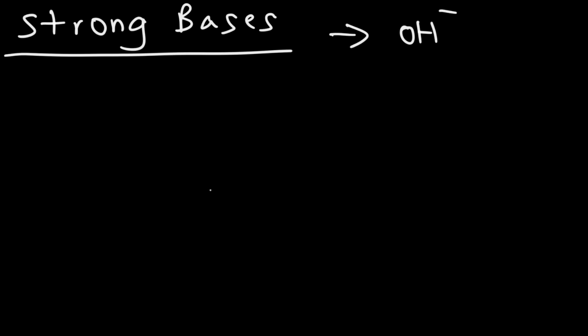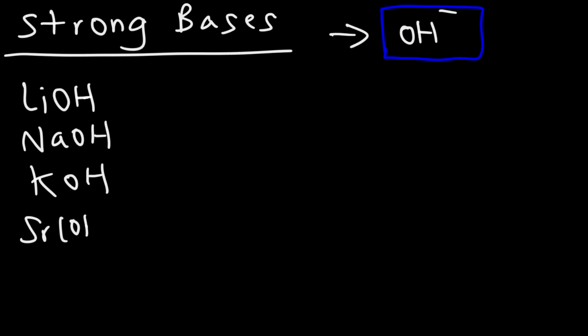Now let's talk about the strong bases that you need to know. Compounds that release hydroxide ions in the solution are strong bases. So these include lithium hydroxide, sodium hydroxide, potassium hydroxide, strontium hydroxide, barium hydroxide, and things like that. But notice that these hydroxides are soluble in water. So you need to be familiar with your solubility rules.